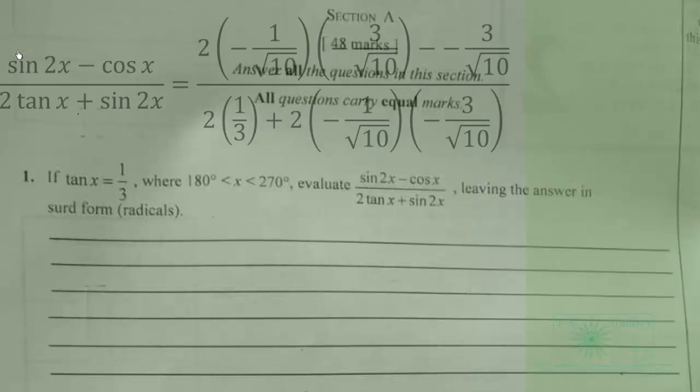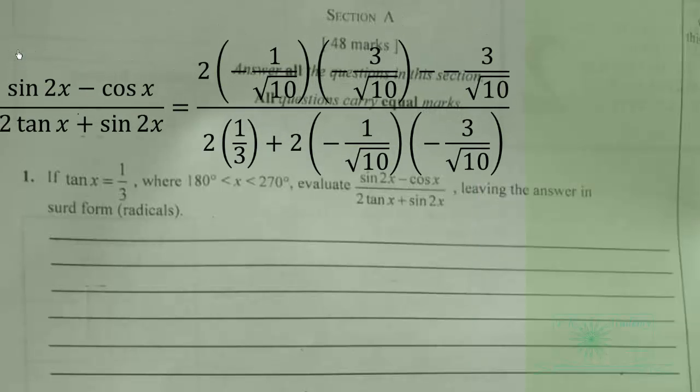So we do the substitution now to get 2 times negative 1 over root 10, because sine x is negative 1 over root 10, then cos x is negative 3 over root 10, minus negative 3 over root 10 in the denominator. In brackets, 2 times tan x, and tan x is 1 over 3, and 2 times negative 1 over root 10.